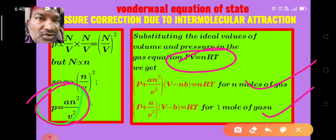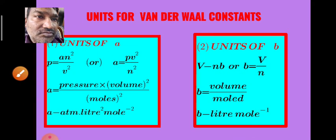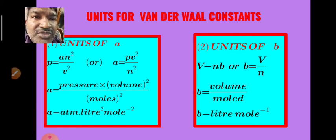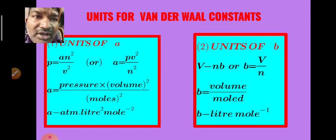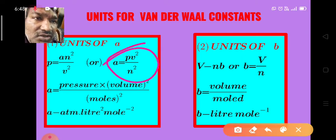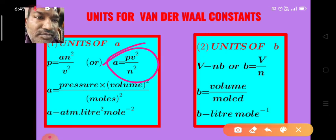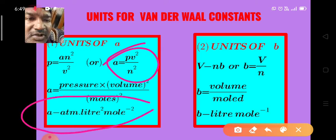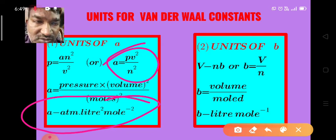The constants a and b are known as Van der Waals constants. The units of a are determined from the fact that an²/V² has units of pressure: a = P·V²/n², so units of a are atmosphere·liter²·mol⁻². The units of b come from V − nb, giving b = V/n, so units of b are liter·mol⁻¹.